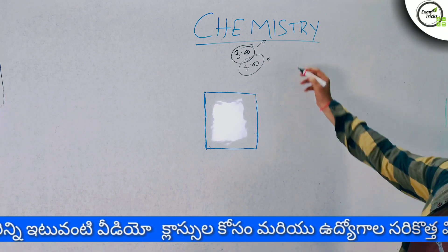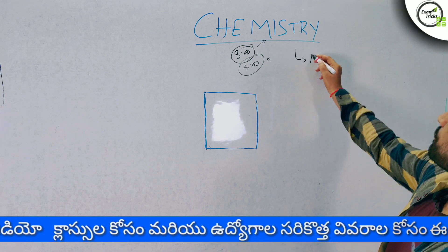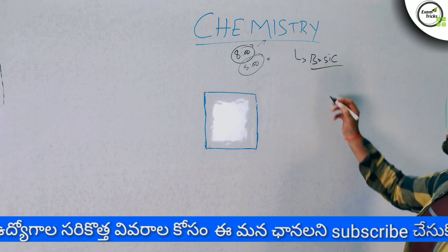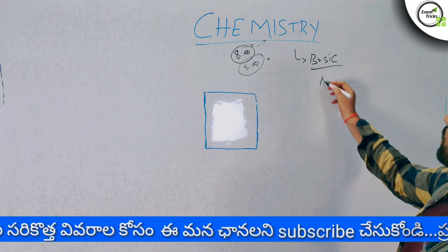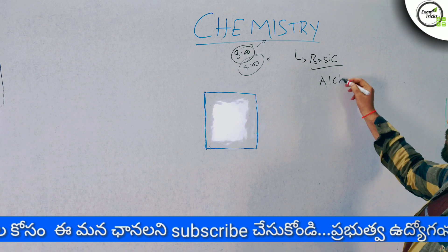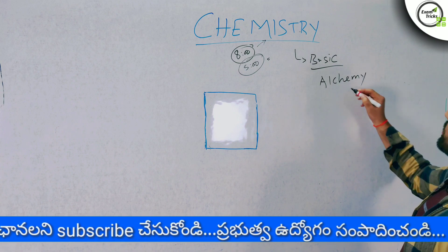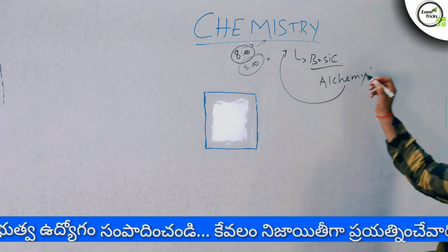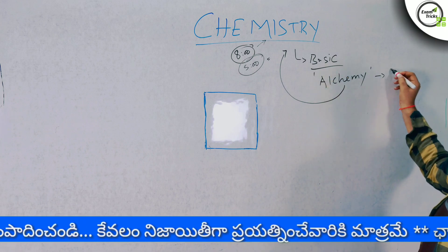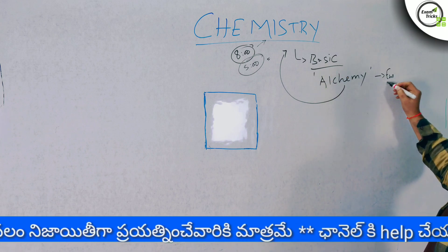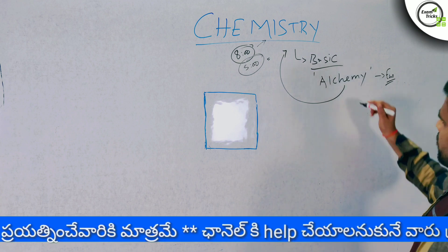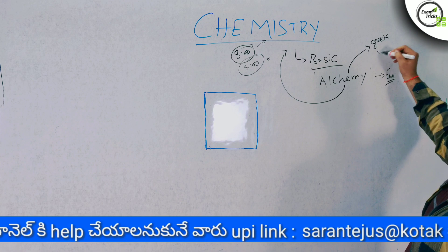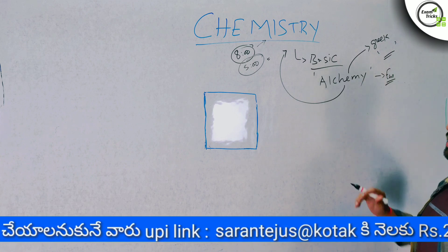First, we will talk about basic chemistry. Chemistry comes from the word 'Alchemy.' The word Alchemy is used in the European region and is derived from Greek. In Greek, there is a word called Alchemy, which is the origin of the term Chemistry.